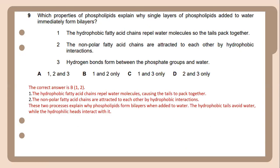Number 9. Which properties of phospholipids explain why a single layer of phospholipids added to water immediately forms bilayers? The answer will be the hydrophobic fatty acid chains repel water molecules so the tails pack together. And number 2, the non-polar fatty acid chains are attracted to each other by hydrophobic interactions. So these two processes explain why phospholipids form bilayers when added to water. Number 1, the hydrophobic tails avoid water while the hydrophilic heads interact with it.